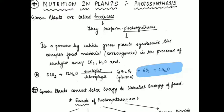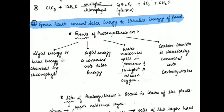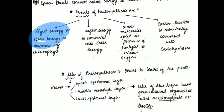We will now study the details of how glucose is formed and how oxygen is released. The most important basis of photosynthesis is that green plants convert solar energy into the chemical energy of food. The first event of photosynthesis is that light energy or solar energy is absorbed by chlorophyll — sunlight falls on the plant and the light energy is captured by the chlorophyll.